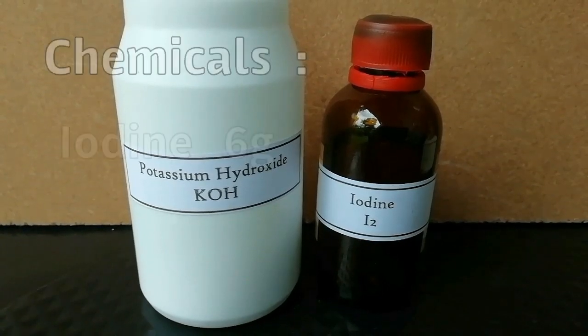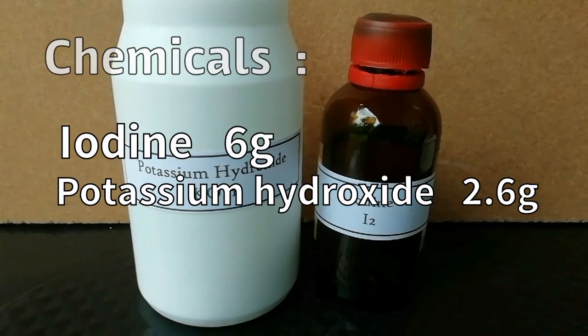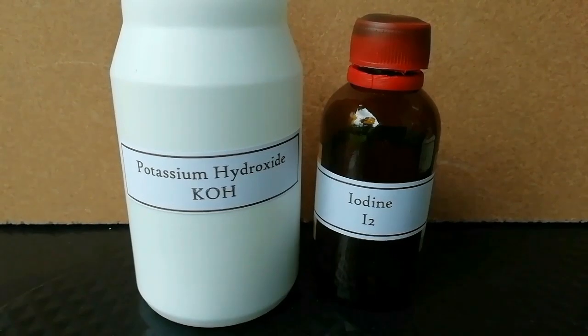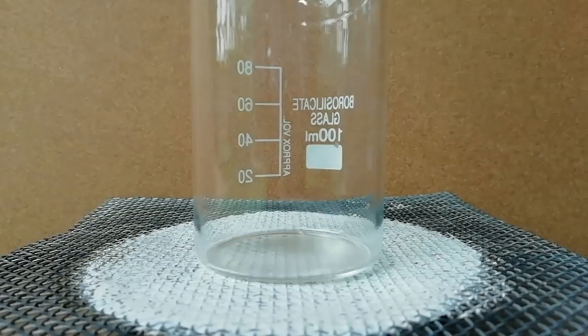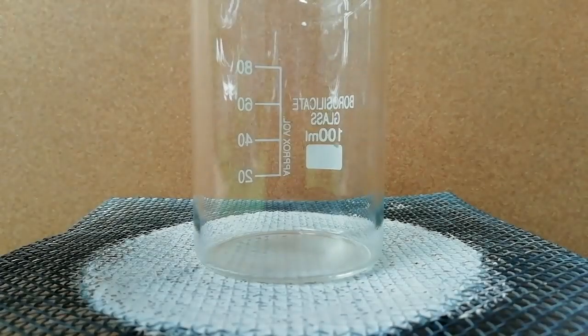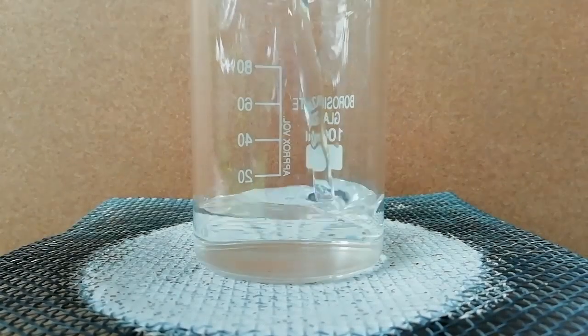For this reaction I used 6 grams of iodine and 2.6 grams of potassium hydroxide. Normally potassium iodide is a very expensive chemical, but making potassium iodide from iodine and potassium hydroxide is very cheap.